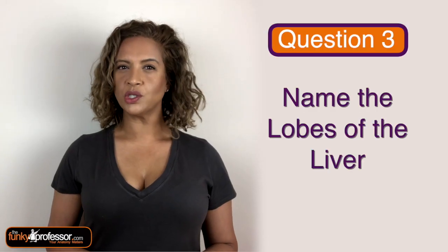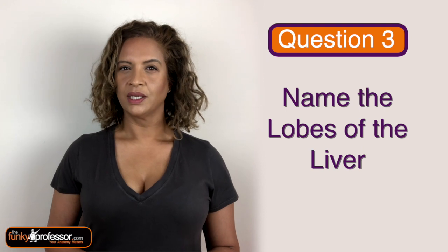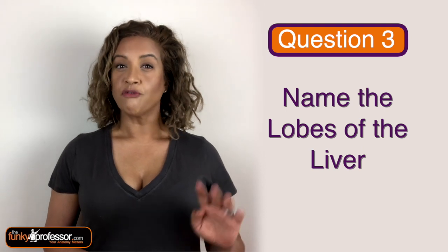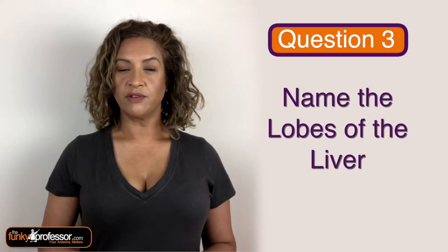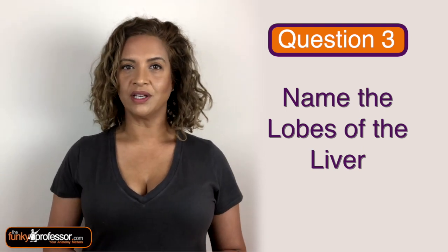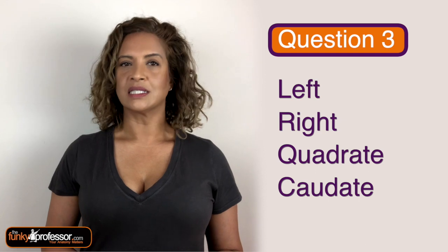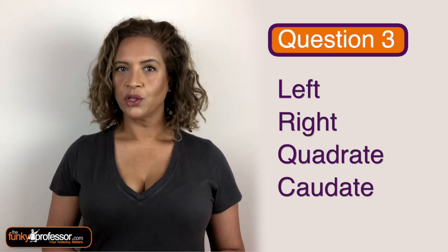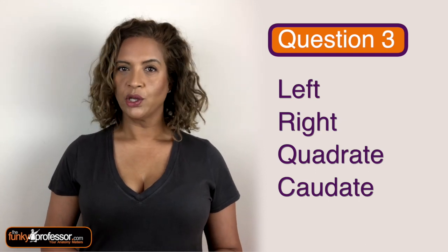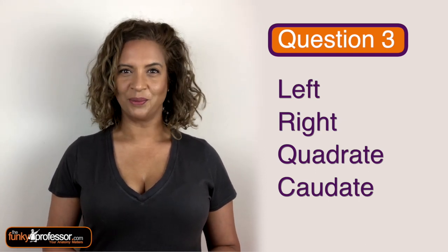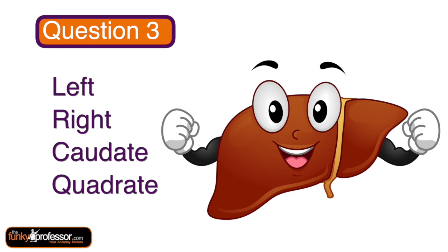Question 3 was: could you name the lobes of the liver? There are 4 anatomical lobes in the liver: the left lobe, the right lobe, the quadrate, and the caudate lobe.